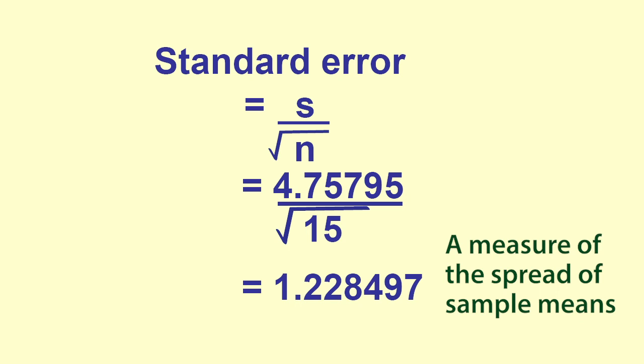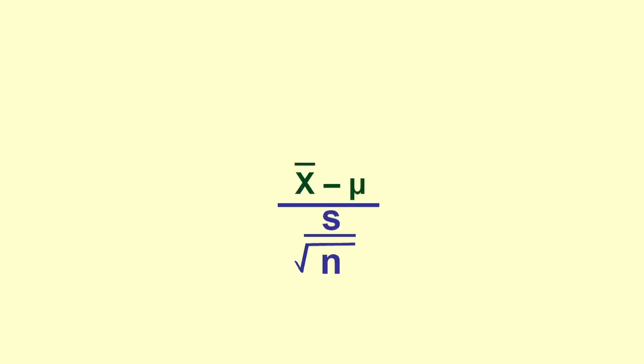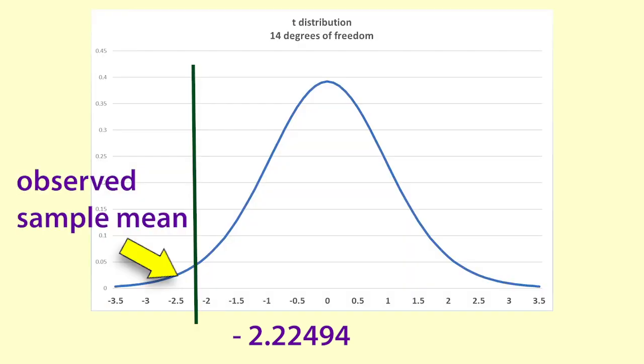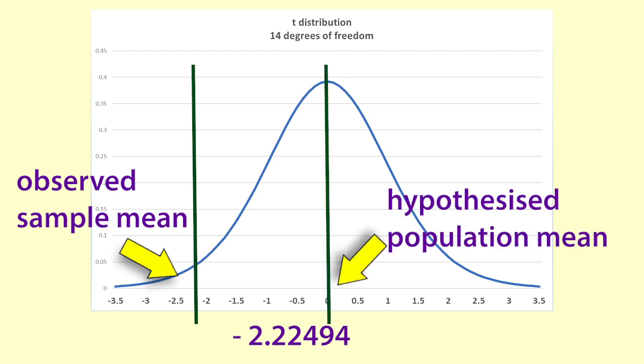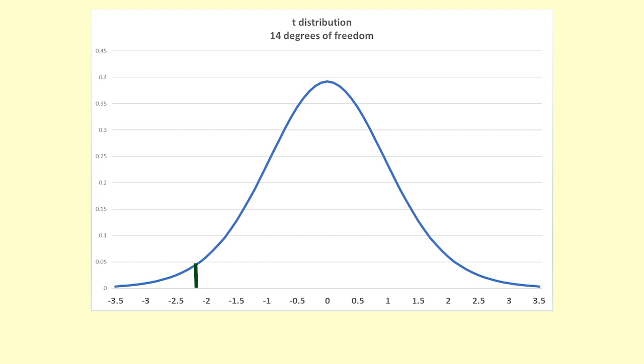We divide the distance that the sample mean is from the hypothesized mean by 1.228497, and we get negative 2.22494. That is saying that the sample mean is a bit more than two standard errors below the hypothesized population mean. Now we need to find out how likely that is in the appropriate t distribution. We use a t distribution with n minus 1 or 14 degrees of freedom.